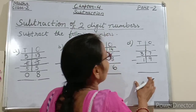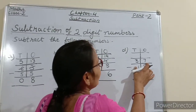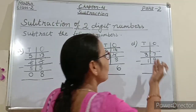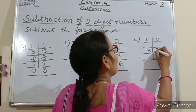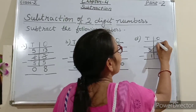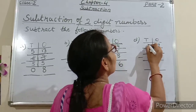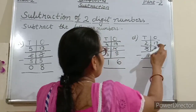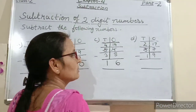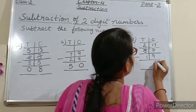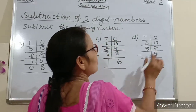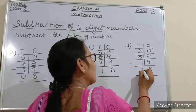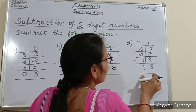Now come to the last question. Subtract 19 from 37. So is it possible to subtract 9 from 7? No. Again we will borrow from the tens place — from 3 tens. So 7 at the ones place will become 17, and 3 tens will become 2 tens. Now 17 minus 9 is equals to 8 — write 8 under the ones column. And 2 tens minus 1 ten is equals to 1. So 37 minus 19 is equals to 18.